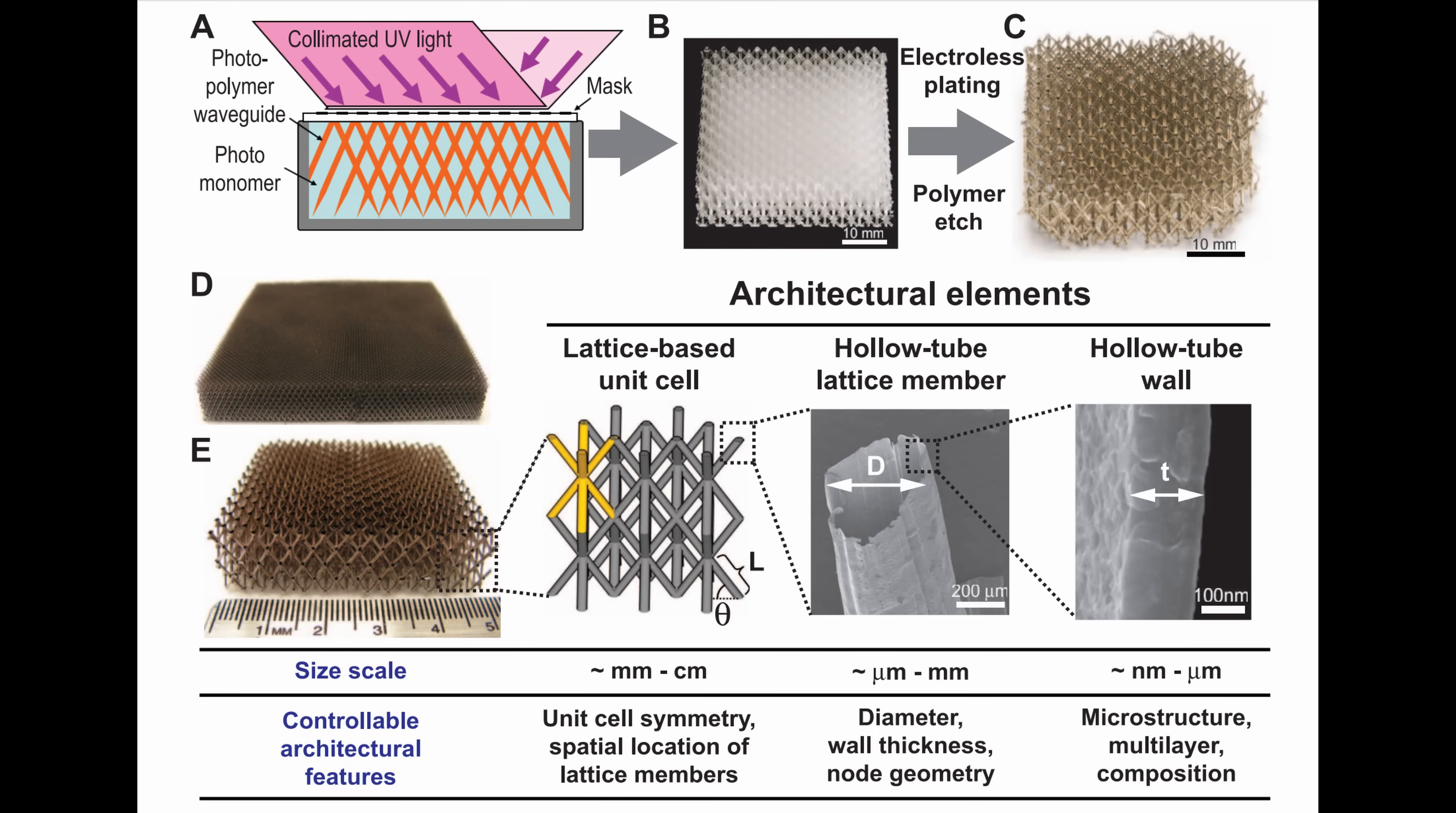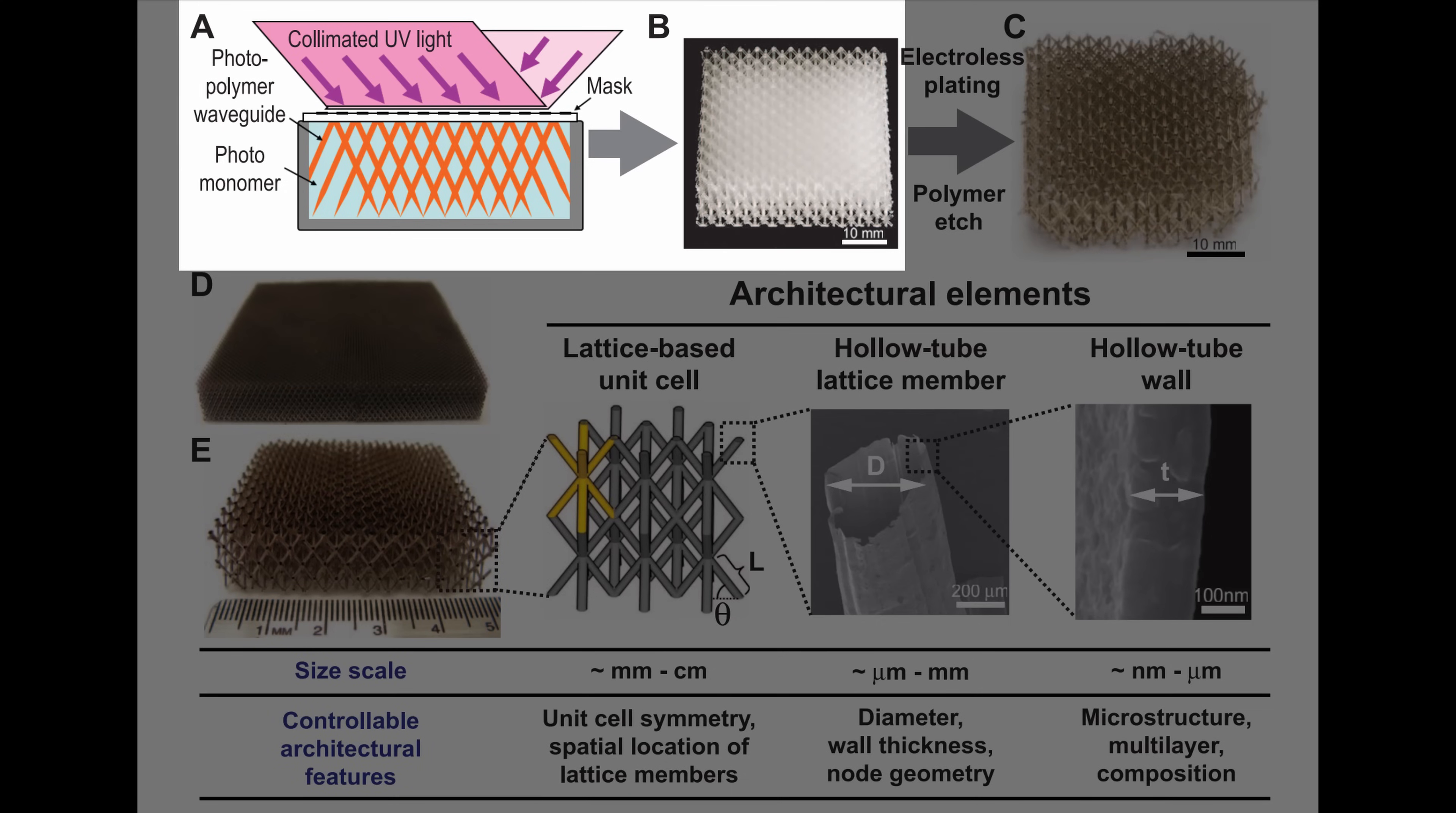This is a neat trick. You can generate really dense or small lattice structures very easily, and it happens much quicker than if you were to 3D print something. So in this paper, they generate the lattice out of the photopolymer, cure it, and then move on to step two, which is the electroless nickel plating process.